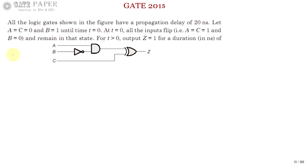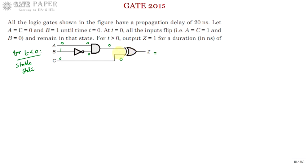First we will look at the steady state, that is for t less than 0. The system is already in the stable state — it has been in this state with A, C equal to 0 and B equal to 1 for a long time, such that all propagation delays have been completed. So you attain a stable state value depending on the input values. The output of the AND gate is 0, and 0, 0 are going to be the inputs for the XOR gate, so the XOR gate output is also 0.